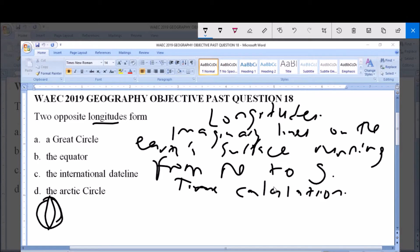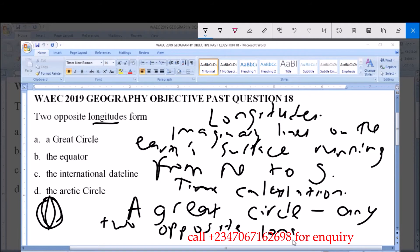So time calculation is the major importance of longitude lines. Now, when you have any two longitude lines opposite each other, they form what is called a Great Circle. A Great Circle is formed by any two opposite longitude lines.